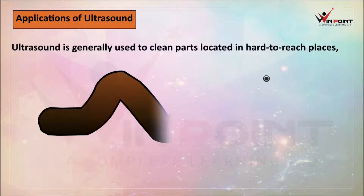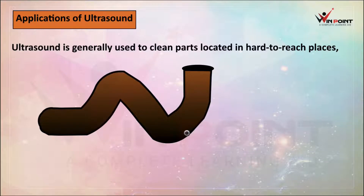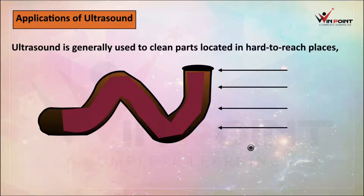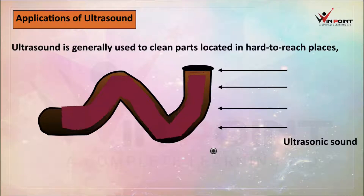For example, if you are considering a spiral pipe, how can we clean this pipe? It's very difficult to get inside the pipe and clean it. So instead of that, we fill a cleaning solution in the pipe and transmit ultrasonic sound. This ultrasonic sound will vibrate the solution, and the solution will vibrate and clean the pipe.